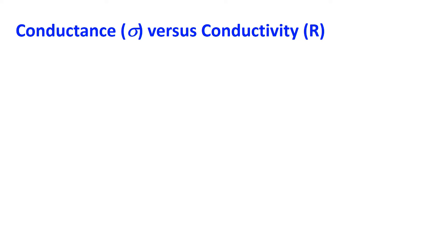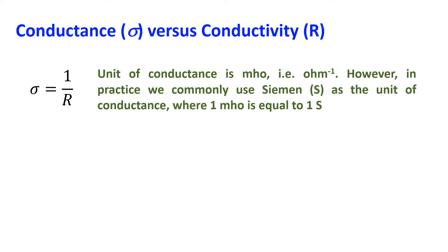Resistance is more commonly used in electrical engineering than conductance from a practical standpoint. The conductance of a conductor measures how easily a material allows the flow of current, whereas conductivity is the property of a material by which it offers ease in current flow. Resistance impedes current flow while conductance allows it to pass through. Conductance is denoted by the Greek letter sigma and measured in Siemens, and is inversely related to resistance: sigma equals 1 by R. The unit of conductance is also called Mho (ohm inverse), where 1 Mho equals 1 Siemen.